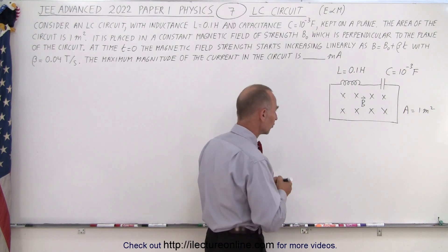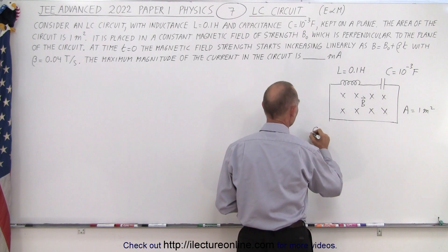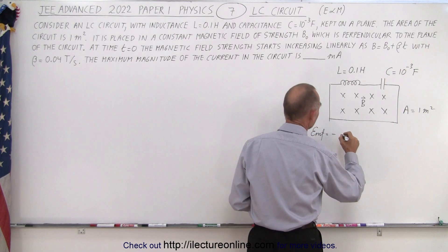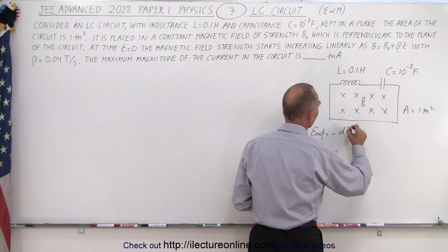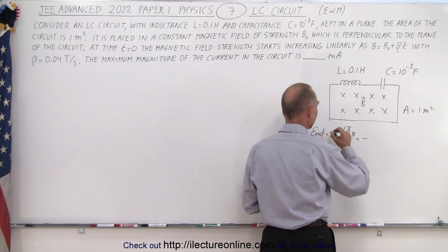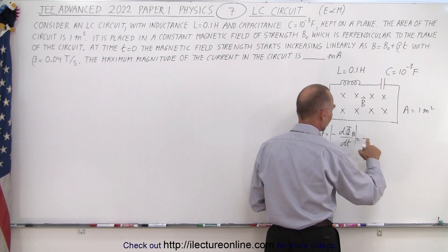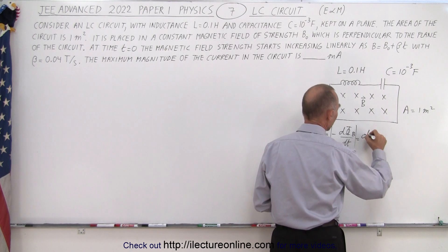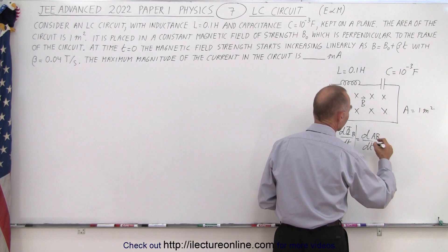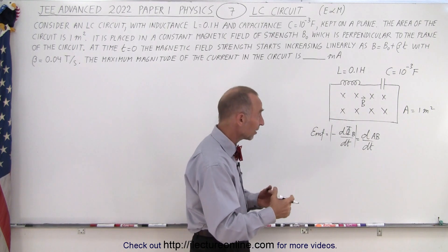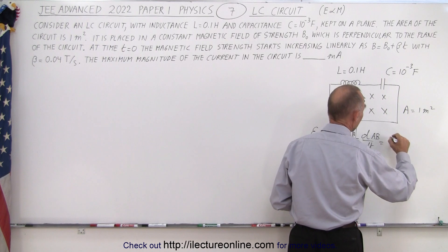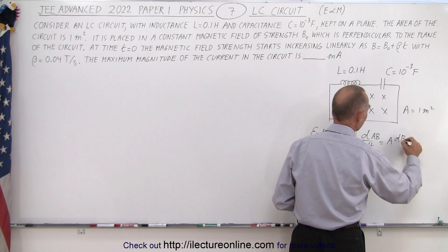Let's calculate what that induced voltage is. The EMF induced is equal to the magnitude of the change in magnetic flux over time. The magnetic flux is d/dt of the magnetic field strength multiplied by the area. Since the area is constant, this can be written as the area times dB/dt.